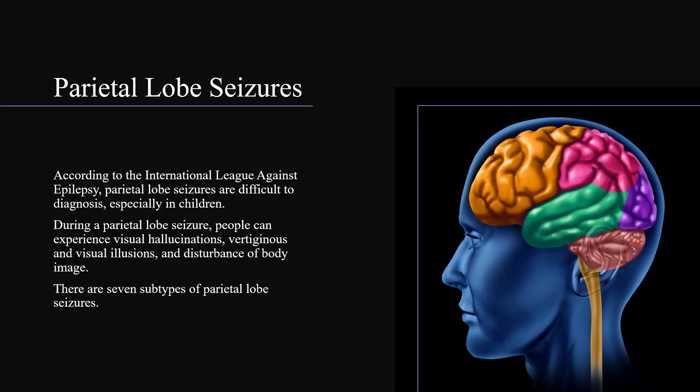According to the International League Against Epilepsy, parietal lobe seizures are difficult to diagnose, especially in children. During a parietal lobe seizure, people can experience visual hallucinations, vertiginous and visual illusions, and disturbance of body image. There are seven subtypes of parietal lobe seizures.